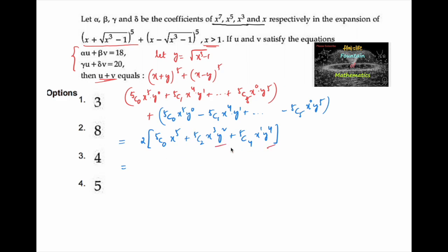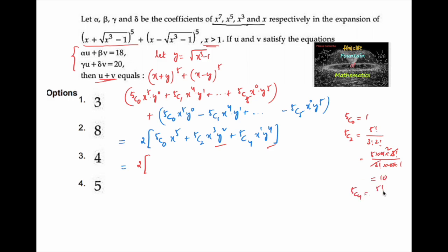Computing the binomial coefficients: ⁵C₀ = 1, ⁵C₂ = 5!/(3!·2!) = (5×4×3!)/(3!×2×1) = 10, and ⁵C₄ = 5!/(4!·1!) = (5×4!)/(4!×1) = 5.